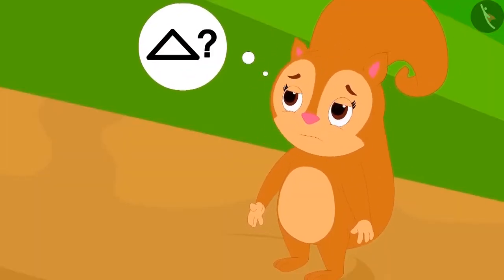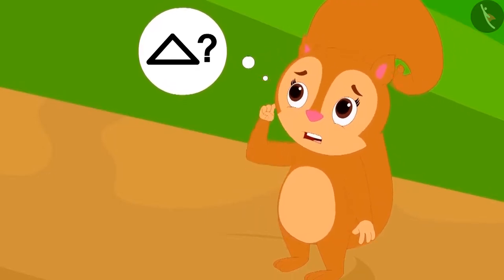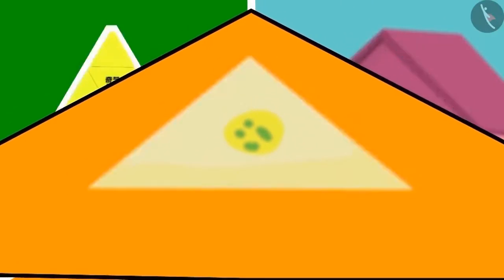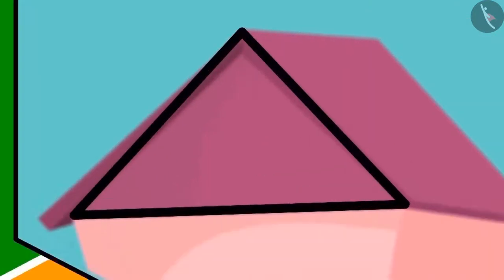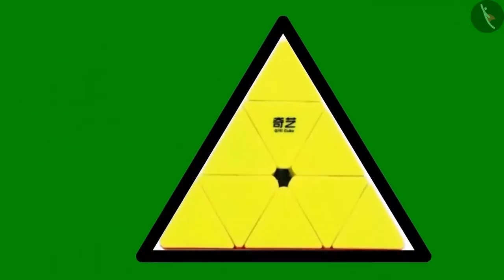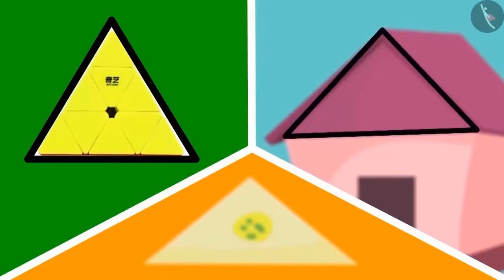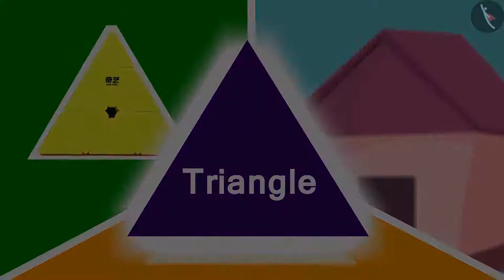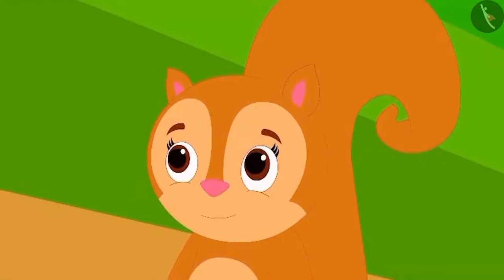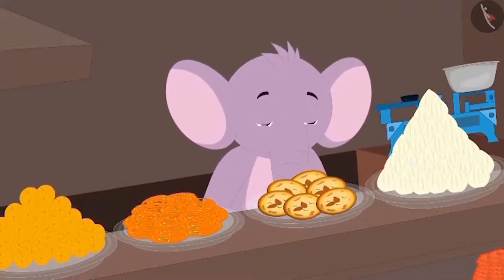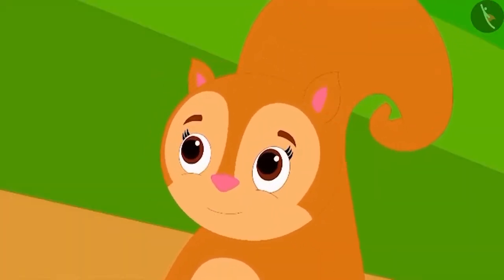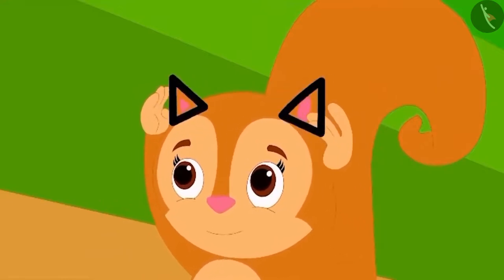Have you seen a triangle elsewhere? Let us listen to Appu's poem on triangle: Like this piece of barfi is a triangle, this roof and toy is also a triangle. The triangle has three sides and three corners. Chanda started laughing. Appu asked why she was laughing, and Chanda laughed happily and told Appu that her ears are also triangles.